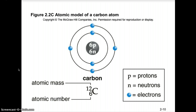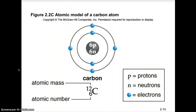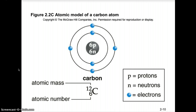The electron cloud model shows the probable location of electrons around the nucleus, while the Bohr model shows electrons at fixed distances. This diagram represents the carbon atom — the most important element to living things, since we are carbon-based organisms. On its periodic table block: name is carbon, symbol is C, atomic mass is 12, and atomic number is 6, giving it six protons, six neutrons, and six electrons.